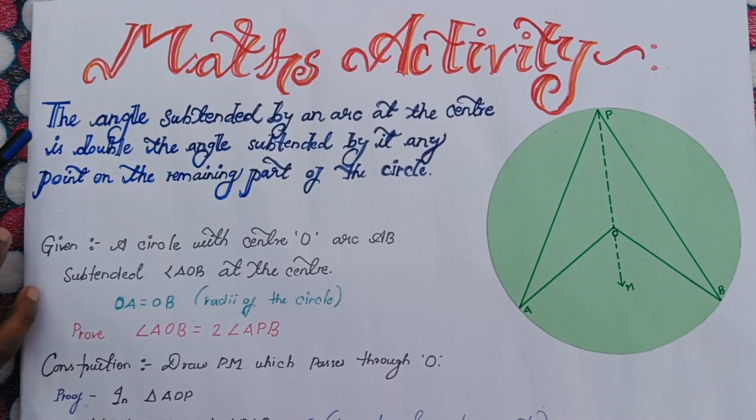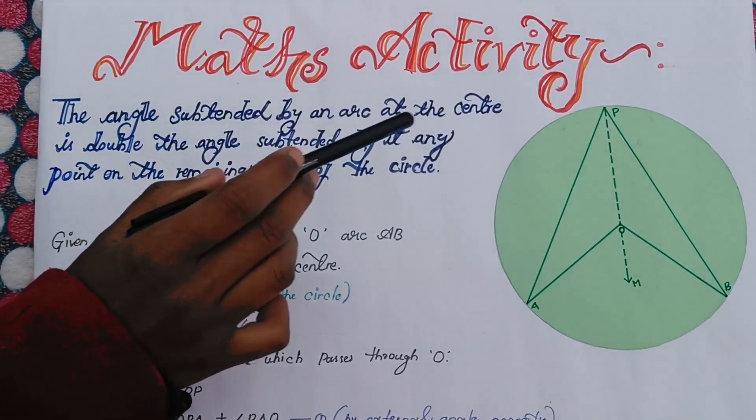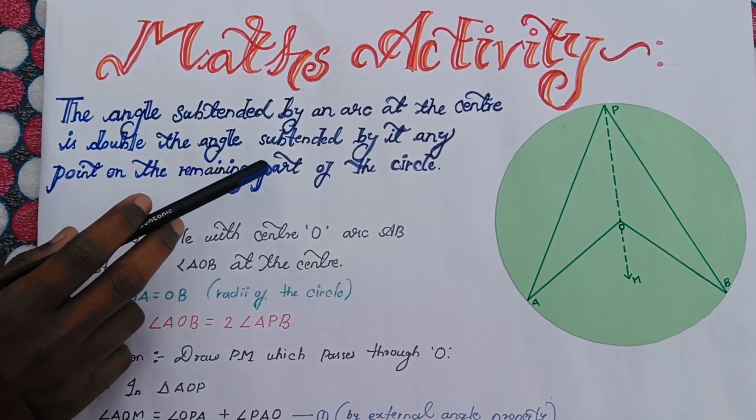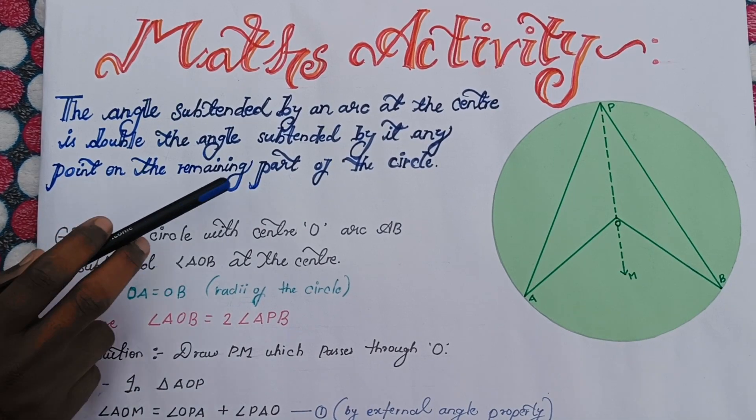The aim of my activity is: the angle subtended by an arc at the center is double the angle subtended by it at any point on the remaining part of the circle.